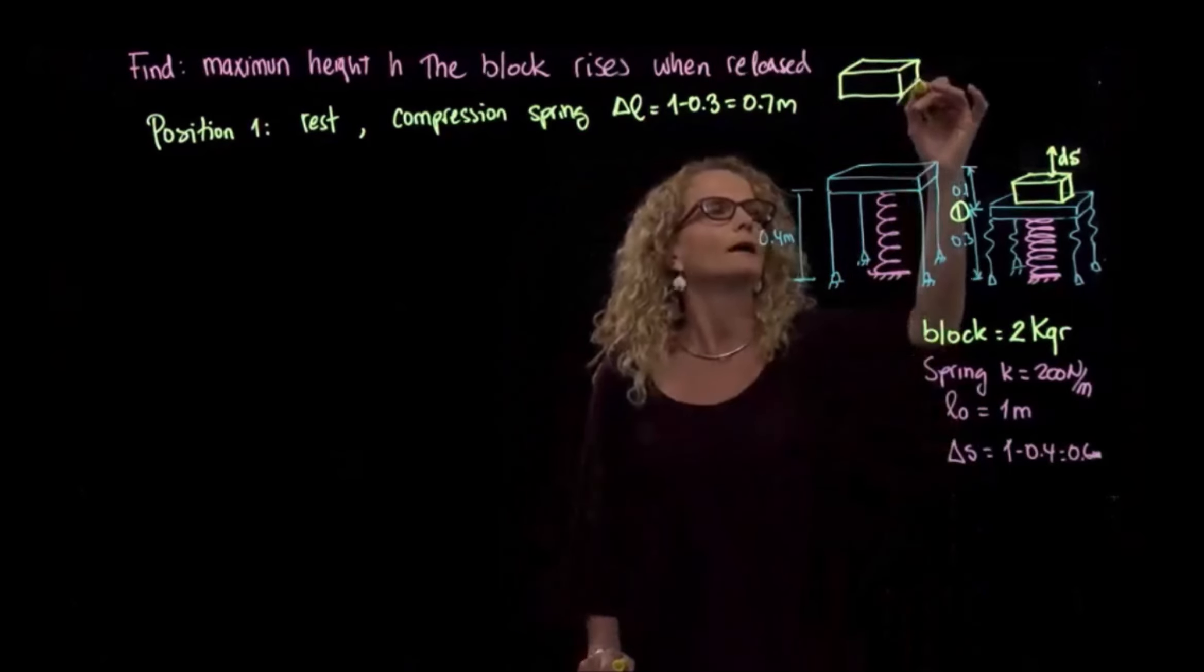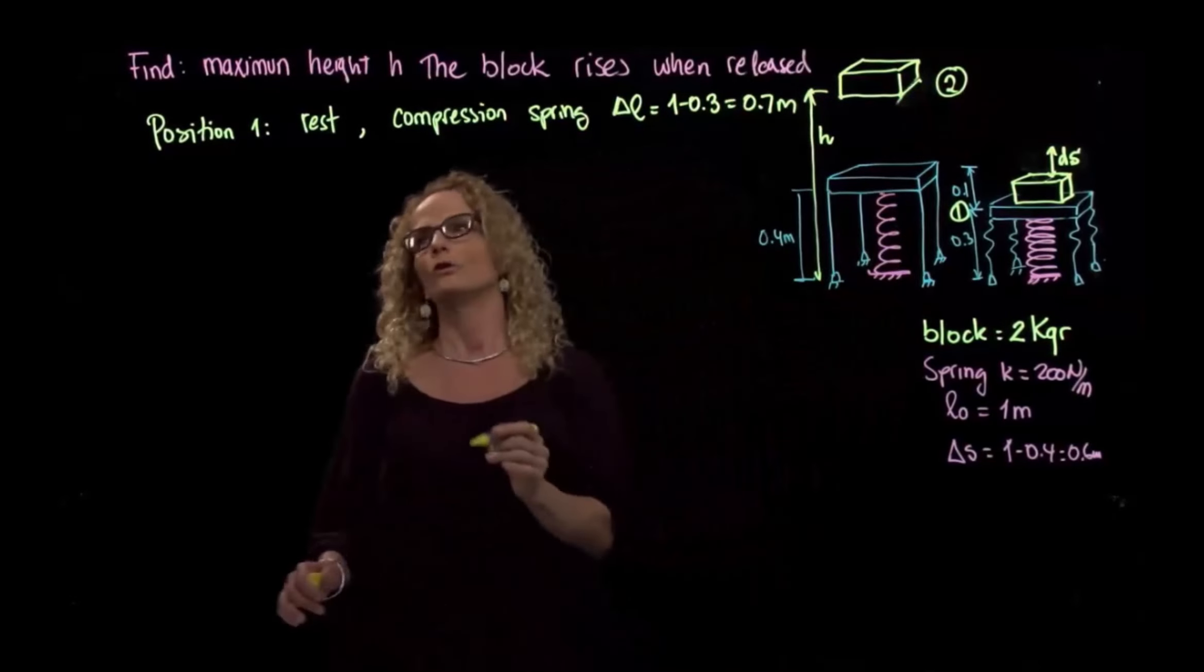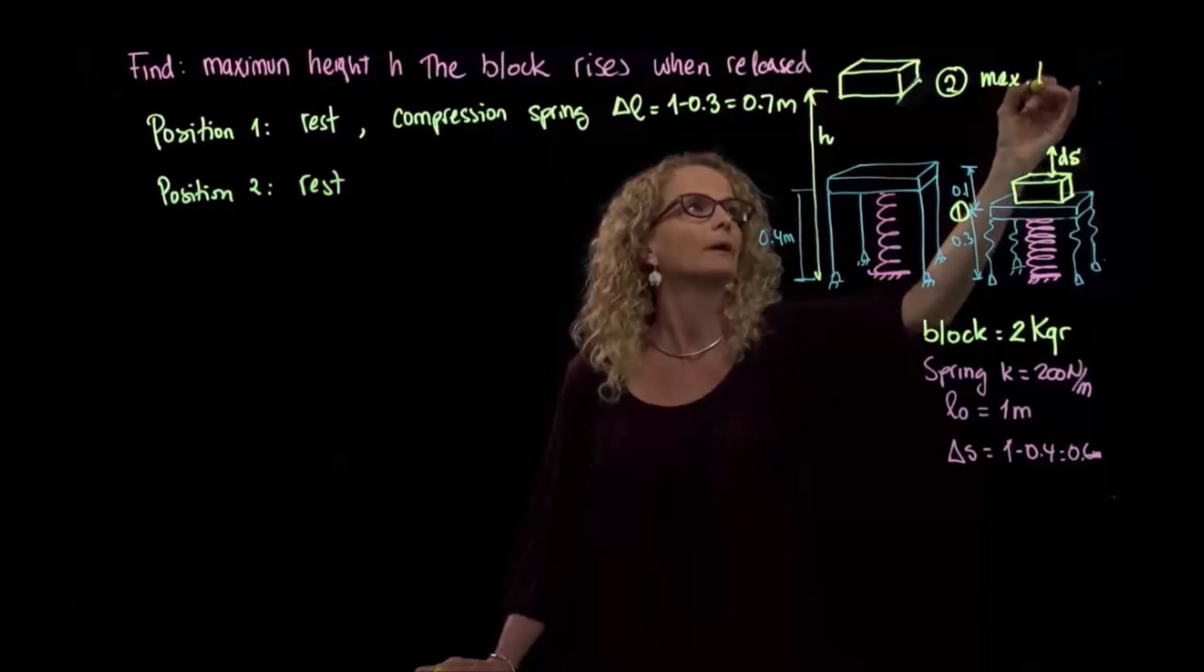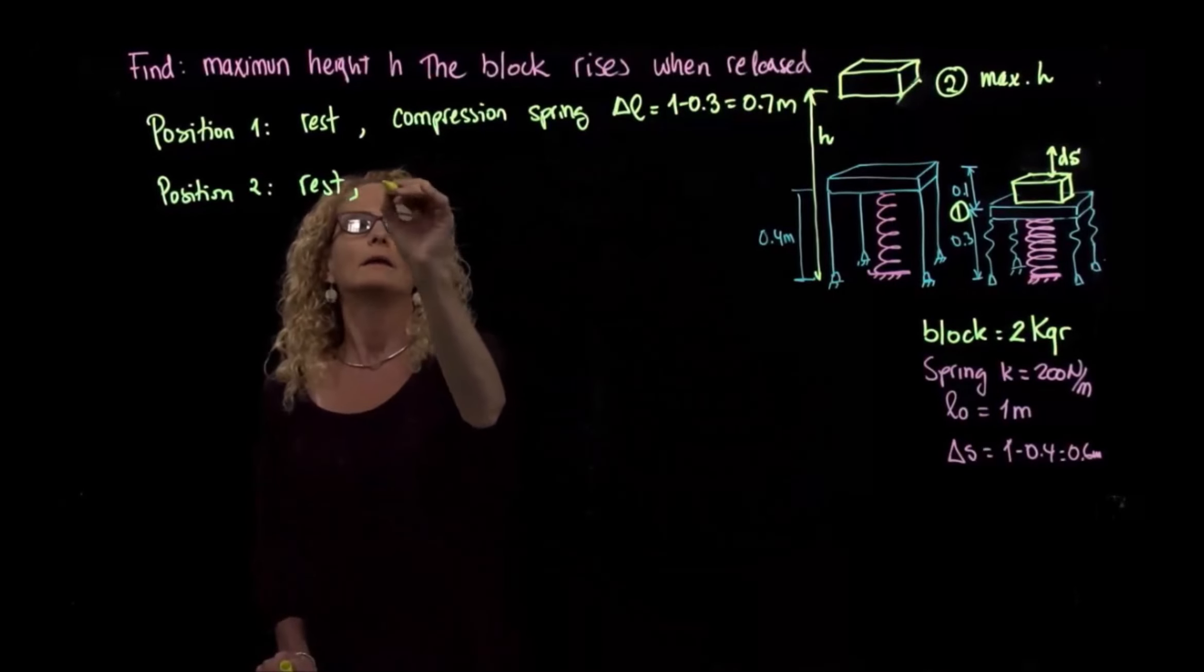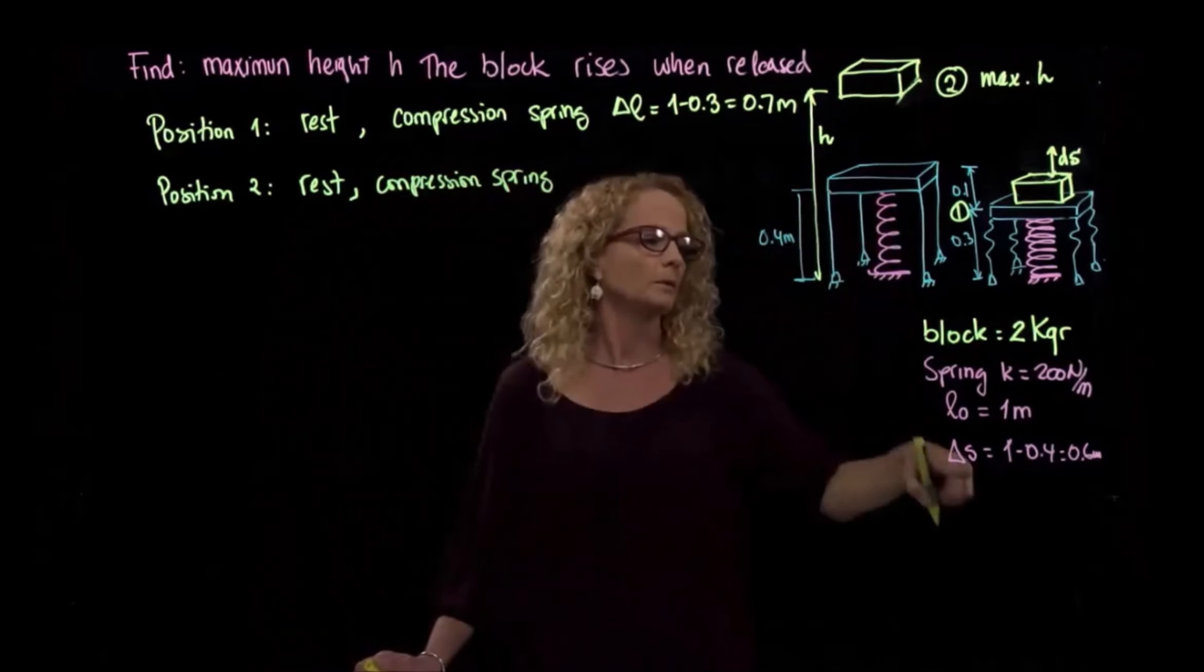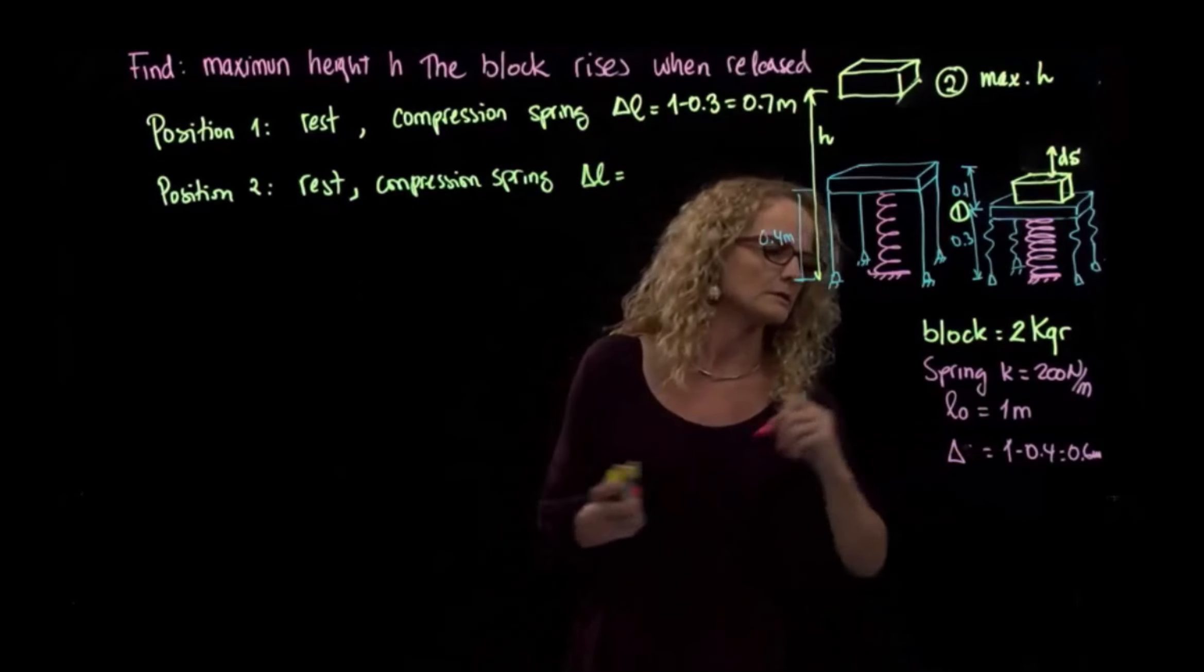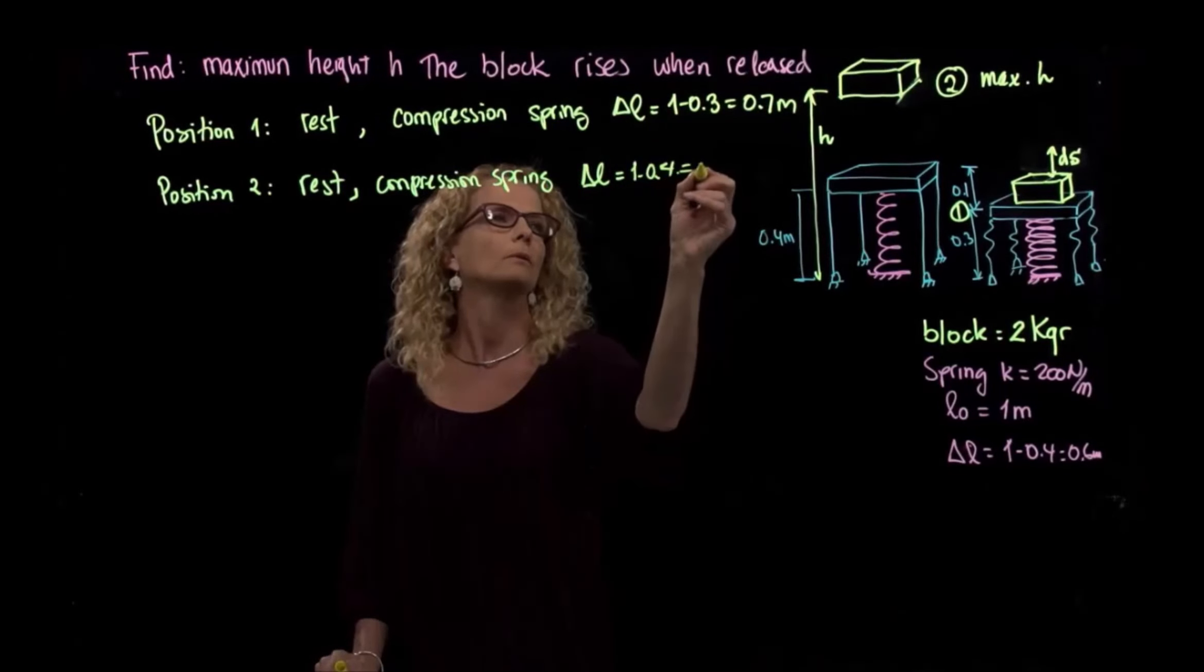They want us to find this height the block had reached in position two. So in position two, we have rest again, because the block is at maximum H, so it means that it reaches maximum and will start falling again. Rest, and the compression of the spring will be this one right here, which we already analyzed. So it will be delta L, which equals 1 minus 0.4 equals 0.6 meters.